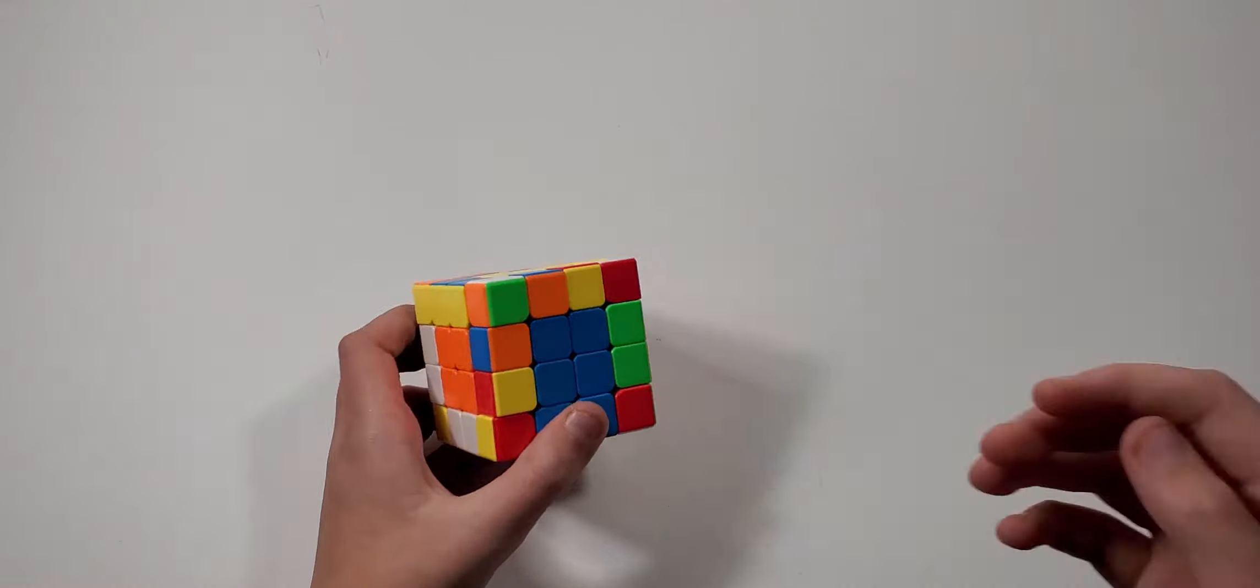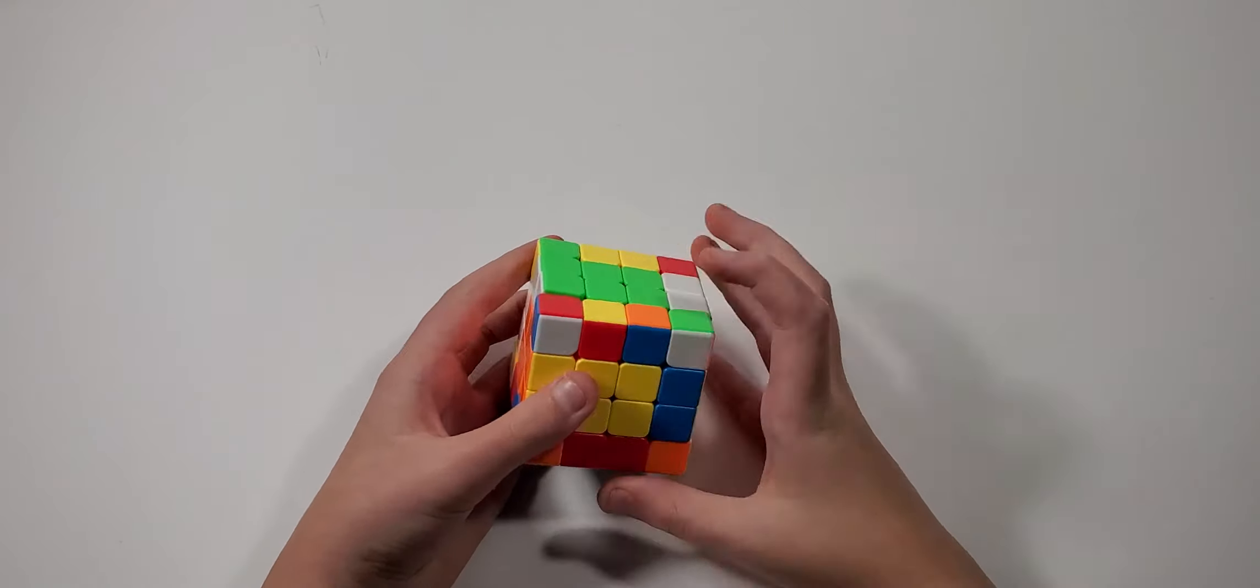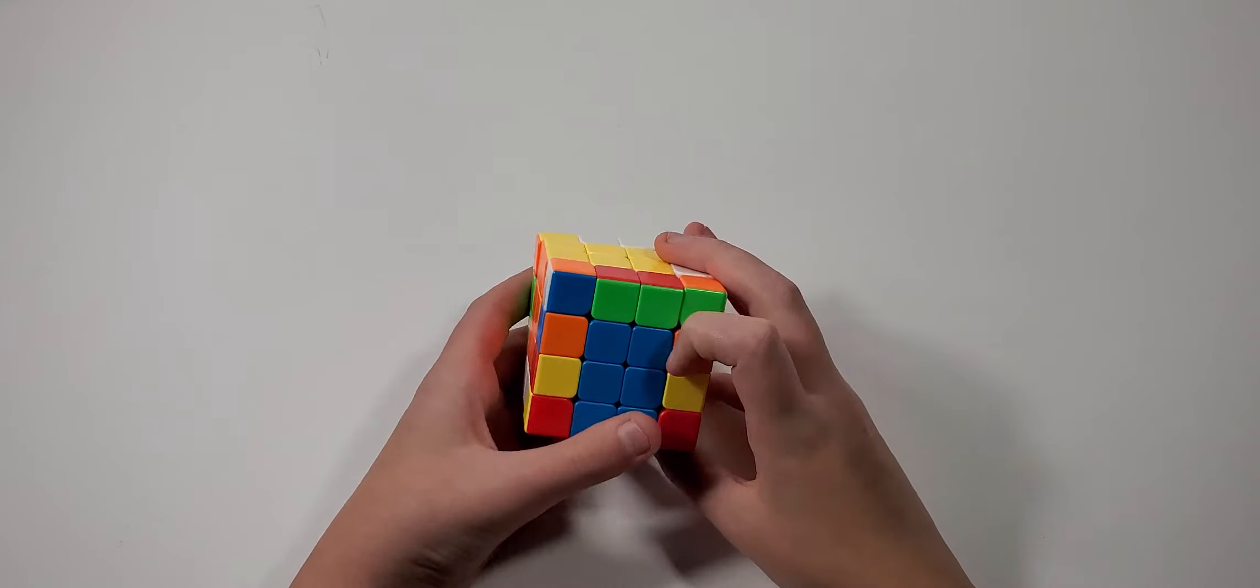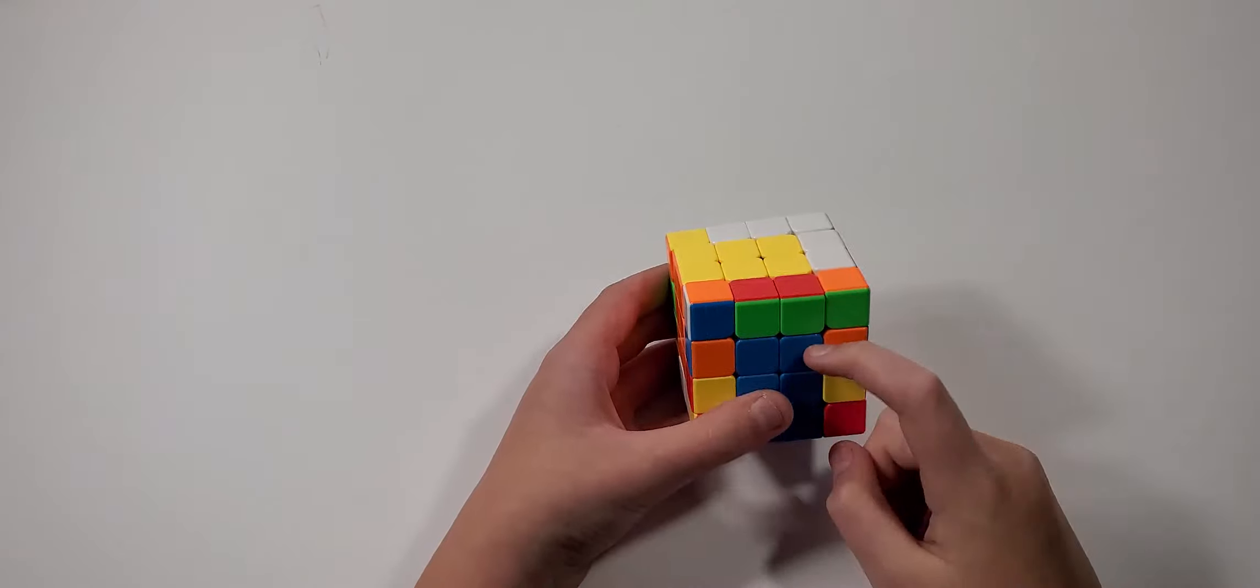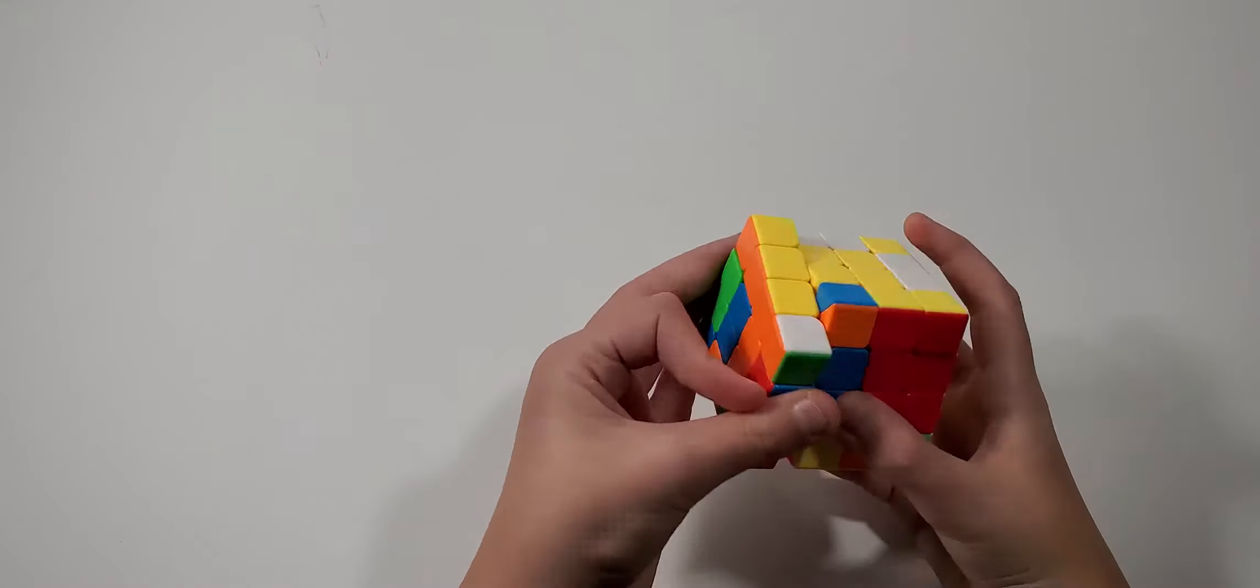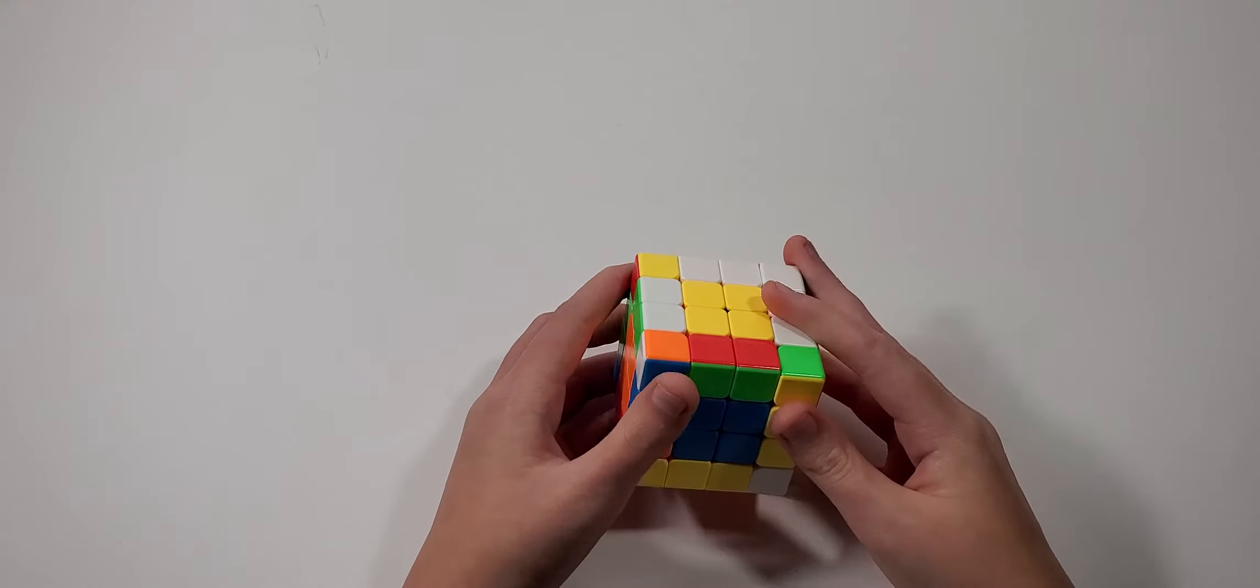So you might find on the last pair that you have this here. You want to bring it down identically across. And so whether I'm across, you know, you just do the regular algorithm for that. And then you have that.